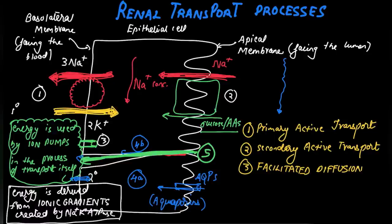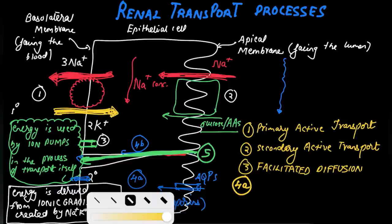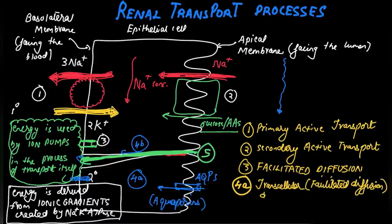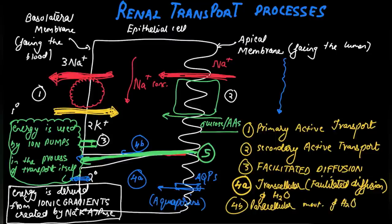There is slight movement of water through leaky tight junctions in the proximal nephron, but these tight junctions are very tight in the distal nephron, so they don't allow water to pass unless it moves through the cell in the presence of ADH. Transcellular movement of water is facilitated diffusion mediated by aquaporins. Finally, as water moves, solvent is dragged along with it — known as solvent drag — and solvent also moves along the paracellular route.